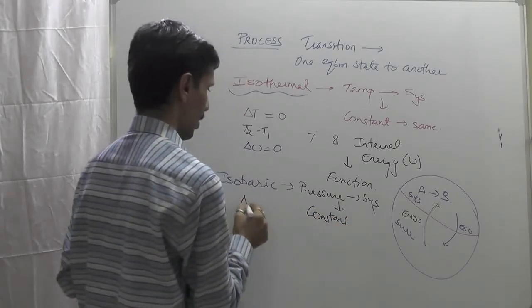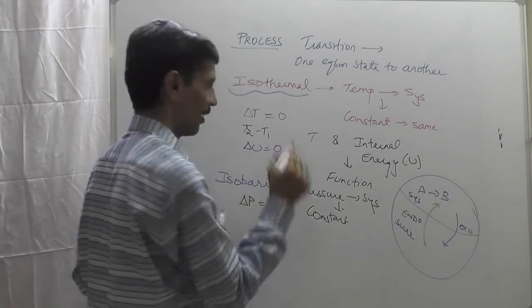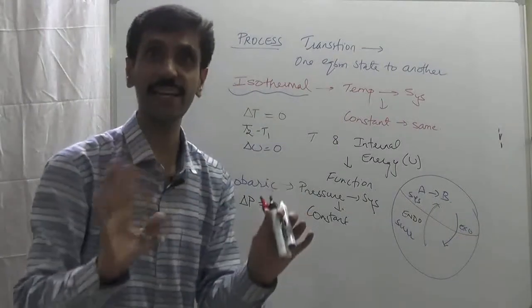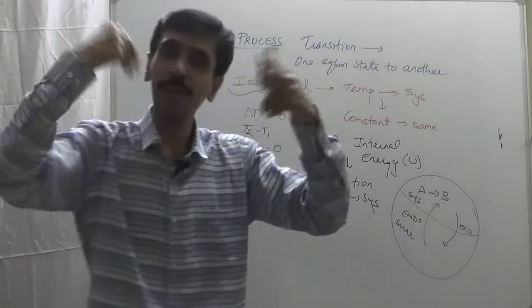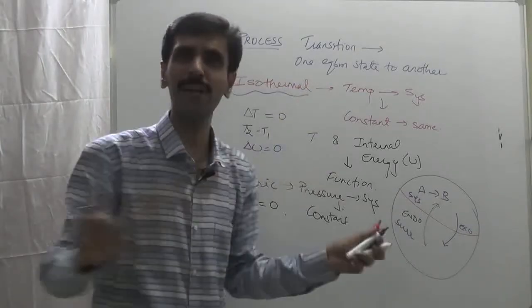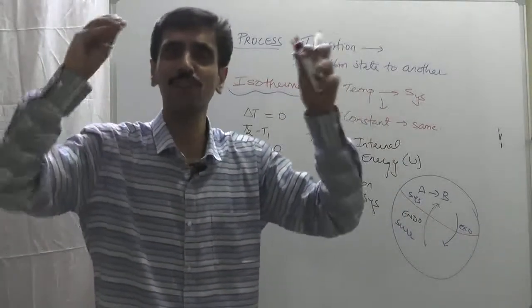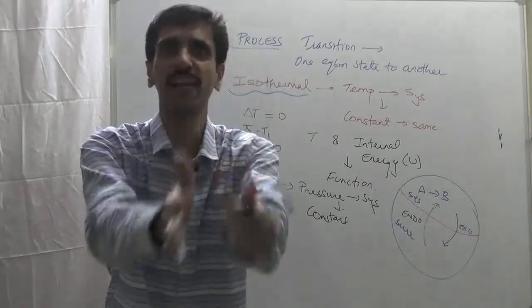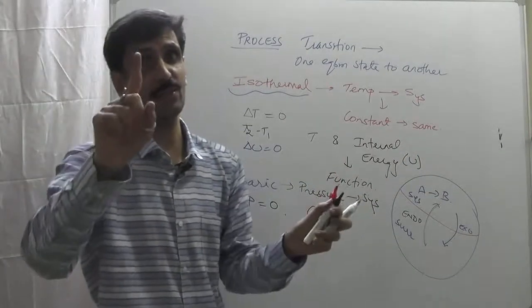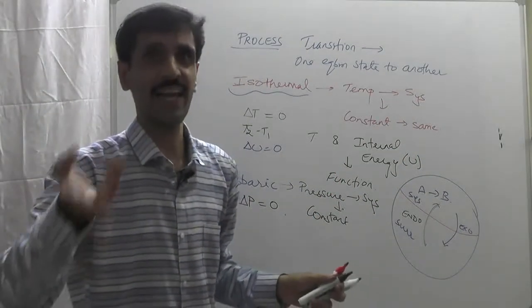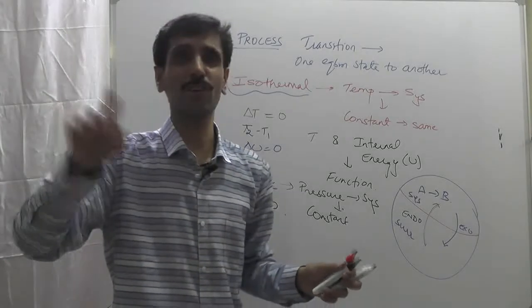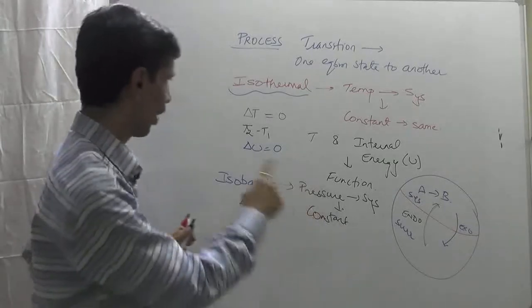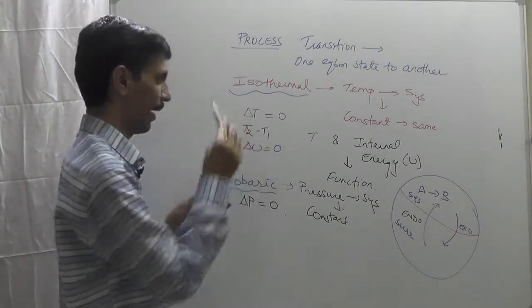And that's why we say delta P will be equal to zero. Sometimes students write P equals zero - no! The pressure can have any value, we just have to see that whatever value it has, it remains still, there should be no change. So remember, delta P equals zero. If you write T equals zero, it's absolutely wrong. This was the second process, isobaric process.